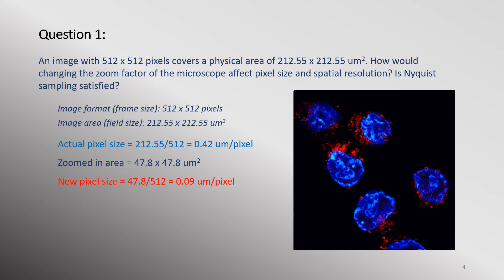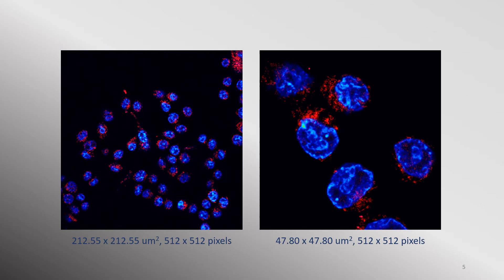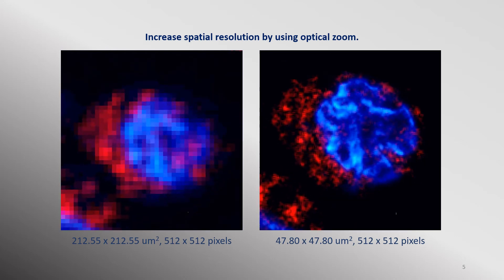That would be approximately 0.1 microns. Does this pixel size meet the Nyquist requirement? If the smallest feature that can be resolved by the microscope objective used is 250 nanometers, the Nyquist sampling rate would be 250 nanometers over 2.3, or around 0.1 microns. Since the pixel size of the zoomed-in image is roughly 0.1 microns, the Nyquist sampling requirement has been satisfied. So changing the zoom factor on the microscope while keeping the number of pixels the same allows you to gain spatial resolution by reducing sample size. Because pixel size is smaller, you can acquire more samples along a given physical distance, allowing you to distinguish more details.